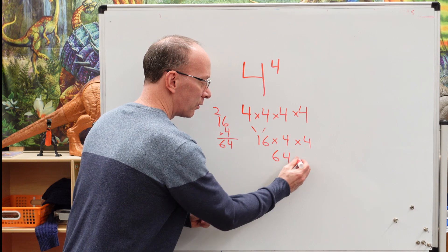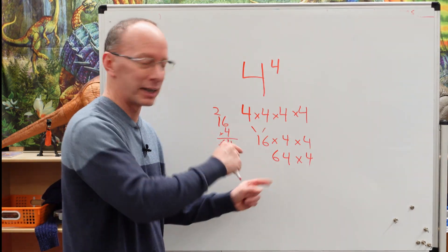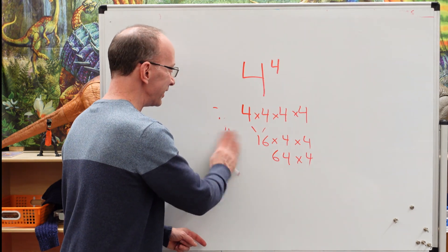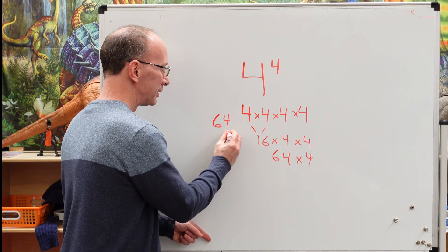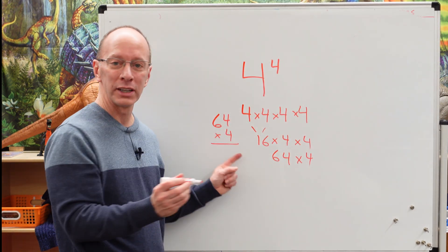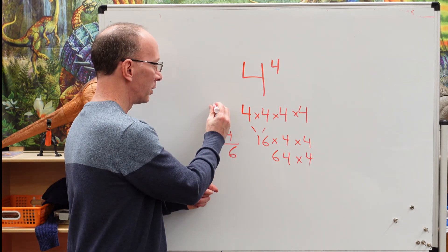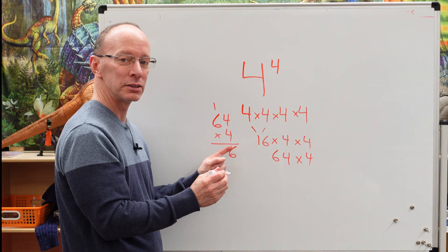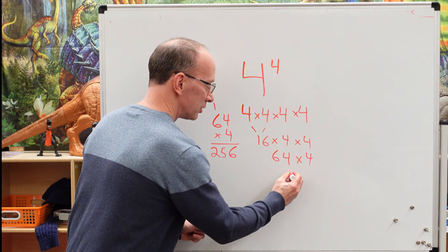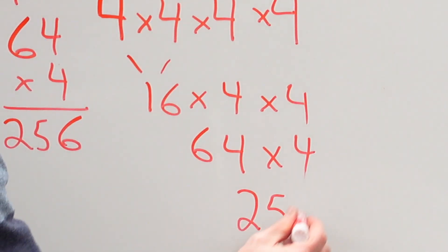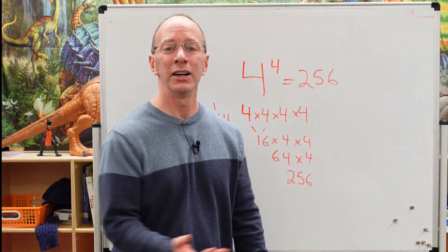We're almost done. 64 times four. Do you know what that is? I don't either, but we're going to have to figure that out over here to the side. All right. 64 times four. Four times four is 16. Carry the one. Six times four is 24. Plus the one. 256. So we have an answer of 256. So four to the fourth power equals 256.